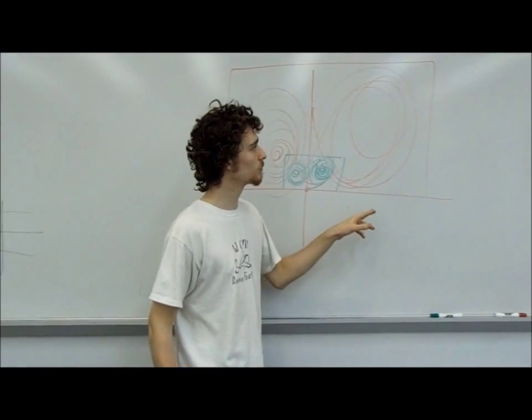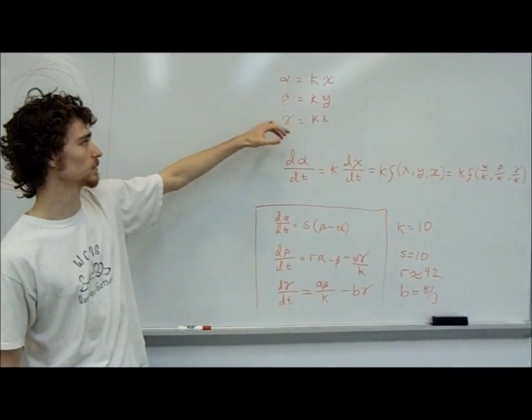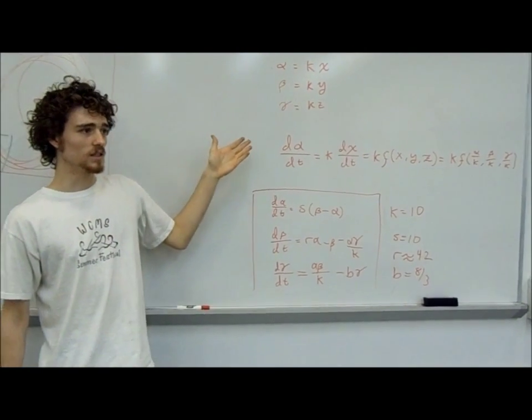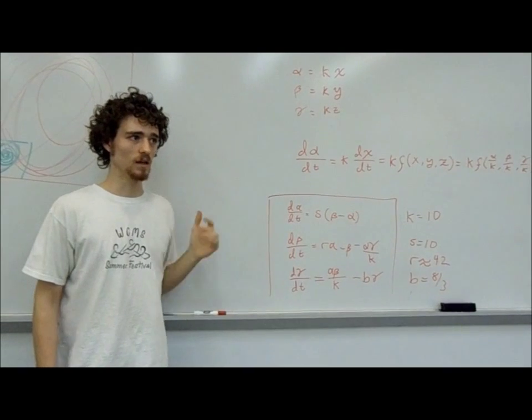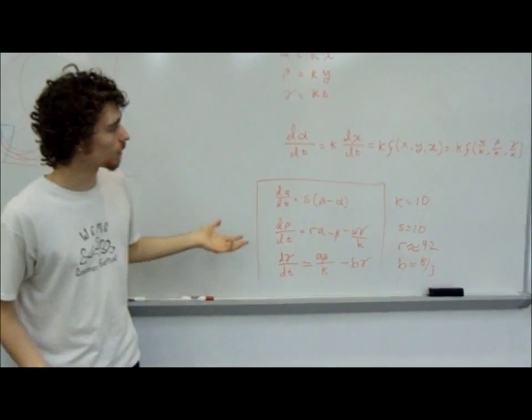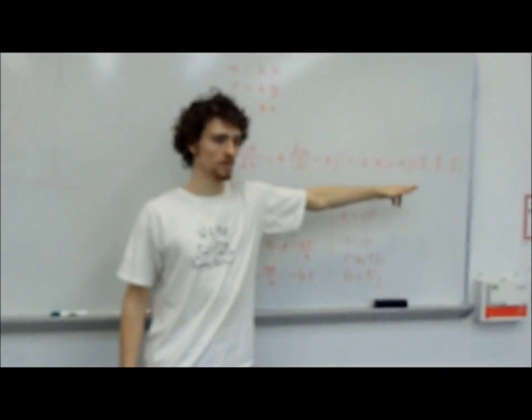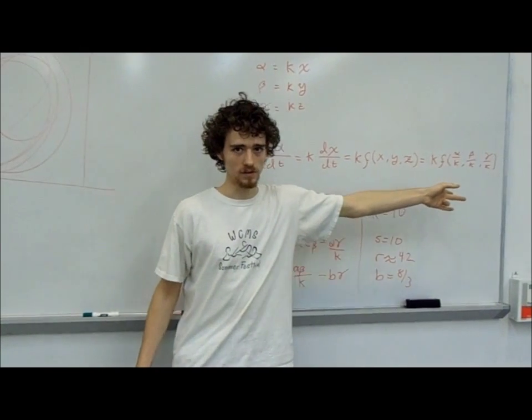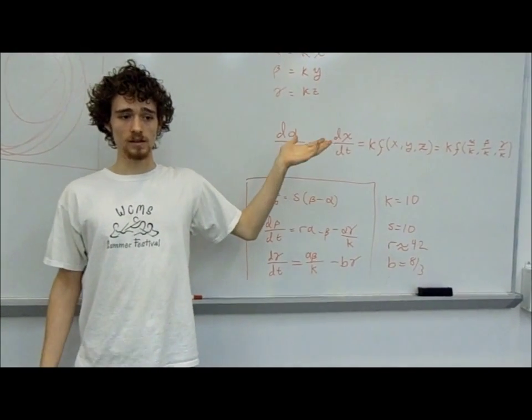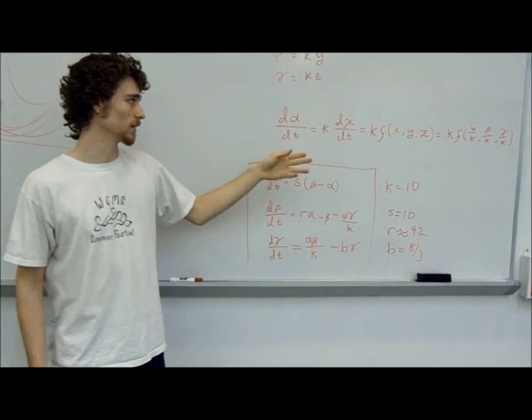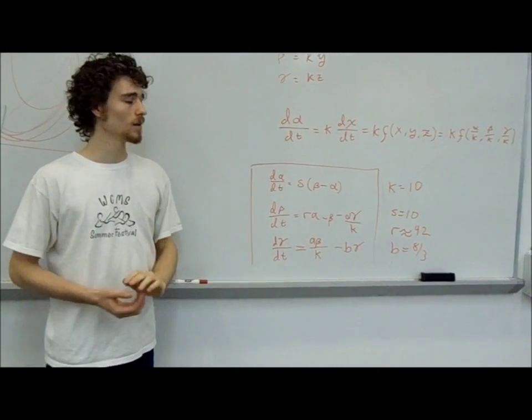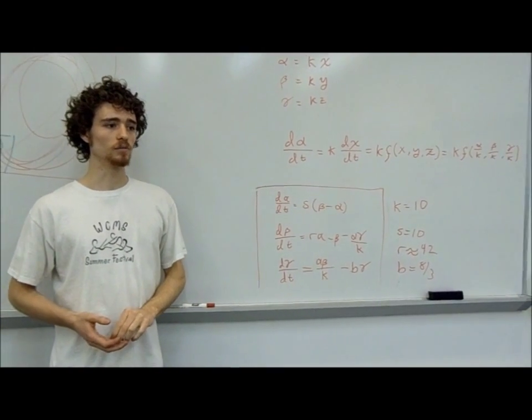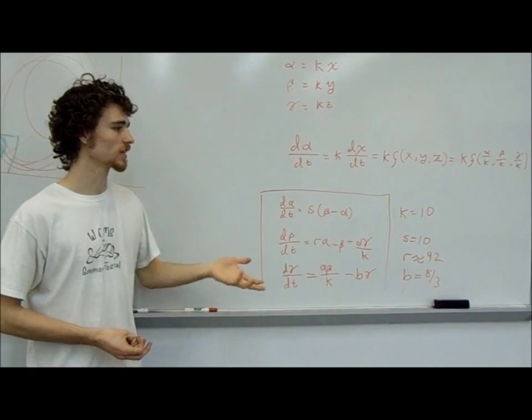So anyway, if you make a coordinate transformation where alpha equals kx, beta equals ky, gamma equals kz, then d alpha dt equals k dx dt. And dx dt is a function of x, y, and z, or a function of alpha over k, beta over k, gamma over k. Now, you've got a k on the outside of the function and a 1 over k on the inside of the function. This means that all linear terms of f of x, y, z don't change. But the nonlinear terms of the differential equations retain a value of 1 over k. They get scaled by 1 over k.